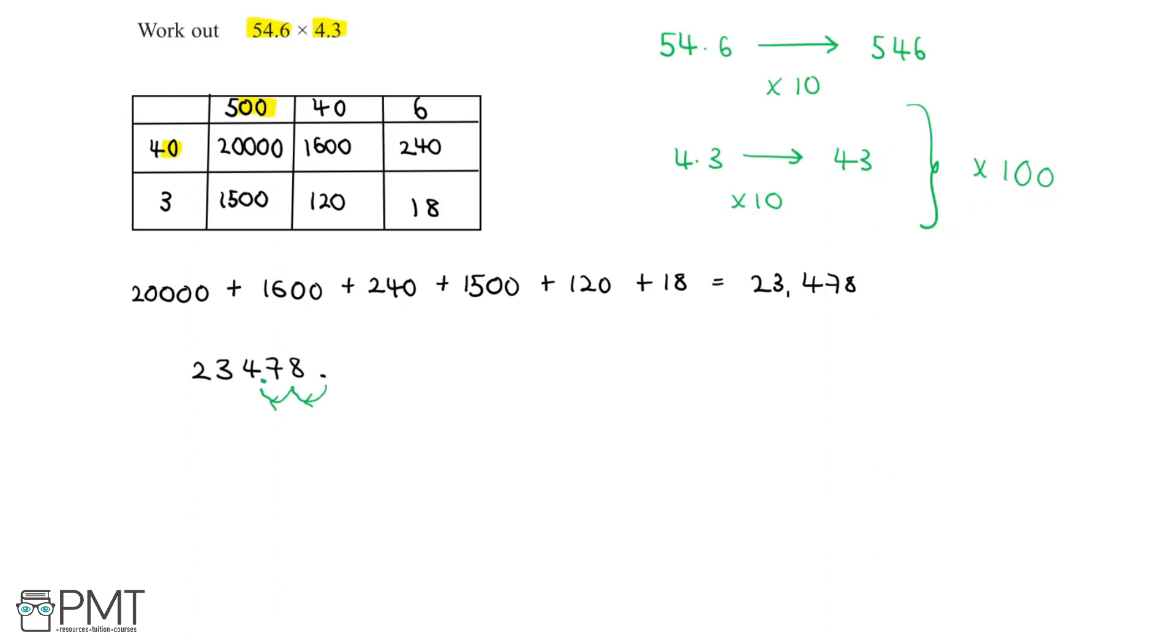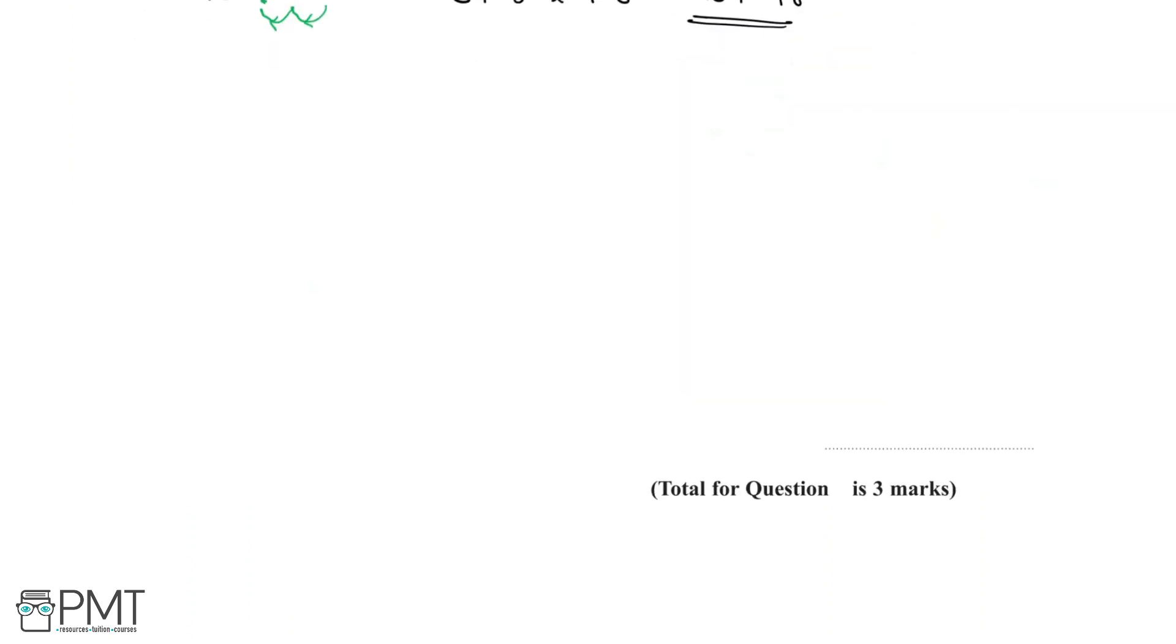So the answer to our question, 54.6 multiplied by 4.3 is equal to 234.78. And we can write this in the answer box below. 54.6 multiplied by 4.3 is 234.78.